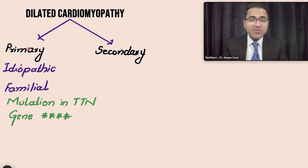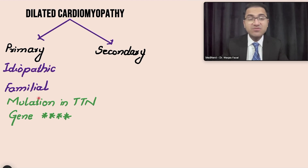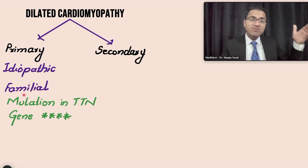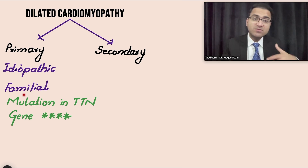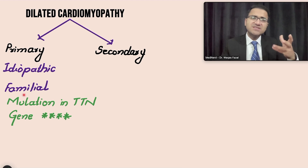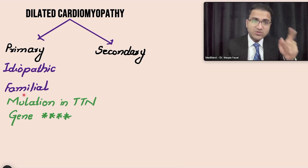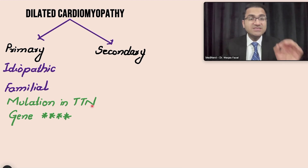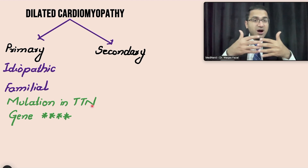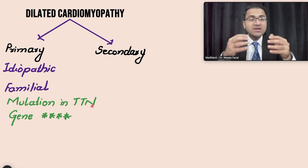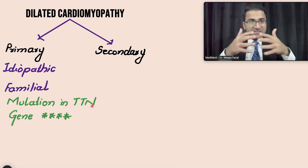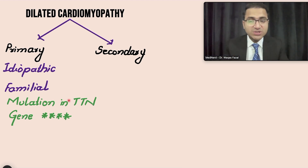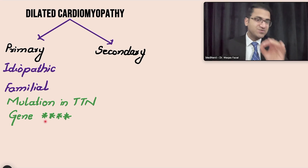In primary dilated cardiomyopathy, the cause is mostly idiopathic or it can be genetic and familial, running in the family. Patients may have a family history of heart failure symptoms in their 50s. These patients should be screened for familial mutations, including mutations in the TTN gene, which encodes the sarcomeric protein titin. Damage to the TTN gene causes dilation of the left ventricle — this is a commonly tested exam point.